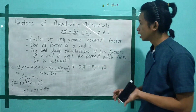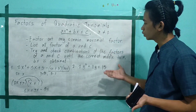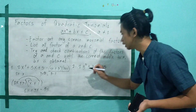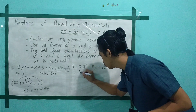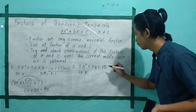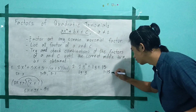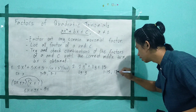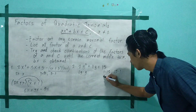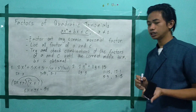Let's move to problem number 2. Is there a common monomial factor? None. So we proceed to step 2: list all the factors of a and c. We have 2y multiplied by y. For c, the factors are 1 times 15, or 15 times 1, or 5 times 3, or 3 times 5.